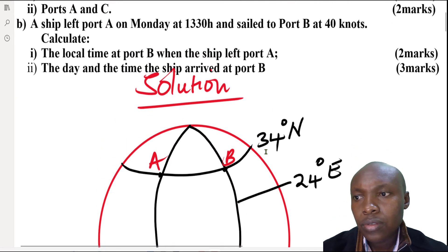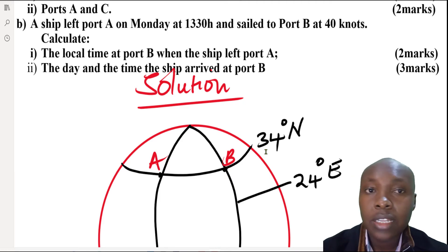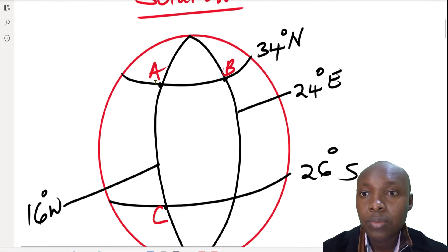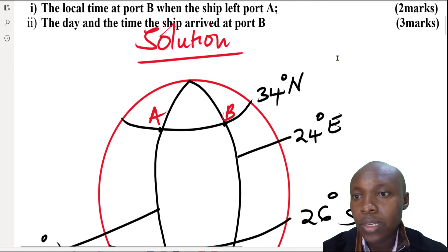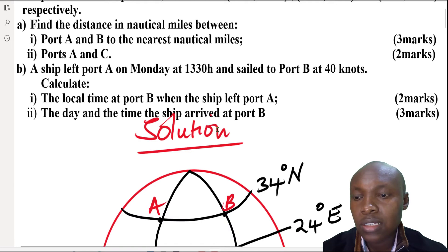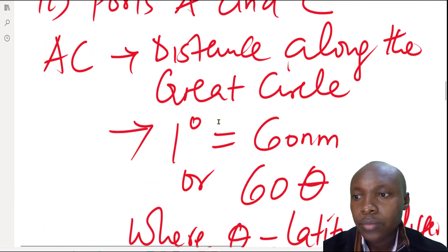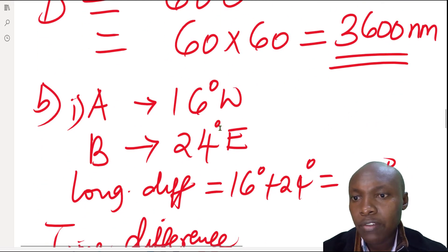Now for question part B: a ship left port A on Monday at 13:30 hours and sailed to port B at 40 knots. We need to calculate the local time at port B when the ship left port A. The distance A to B is along the small circle, as calculated.